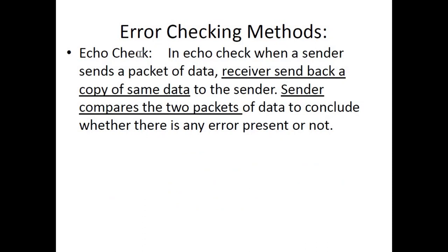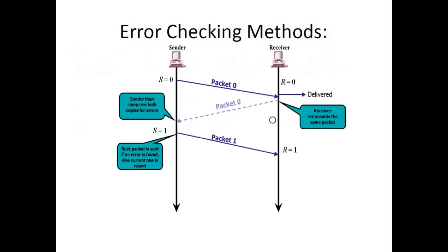The next error checking method is echo check. When a sender sends a packet of data, the receiver sends back a copy of the same data or same packet — that is the first keyword. The sender then compares the two packets — that is the second keyword — to conclude whether any error is present. The sender compares both copies; if there is no difference, the next packet is sent, otherwise the same packet is resent. This is somewhat obsolete as it uses a lot of resources, with the whole packet moving forward and backward.